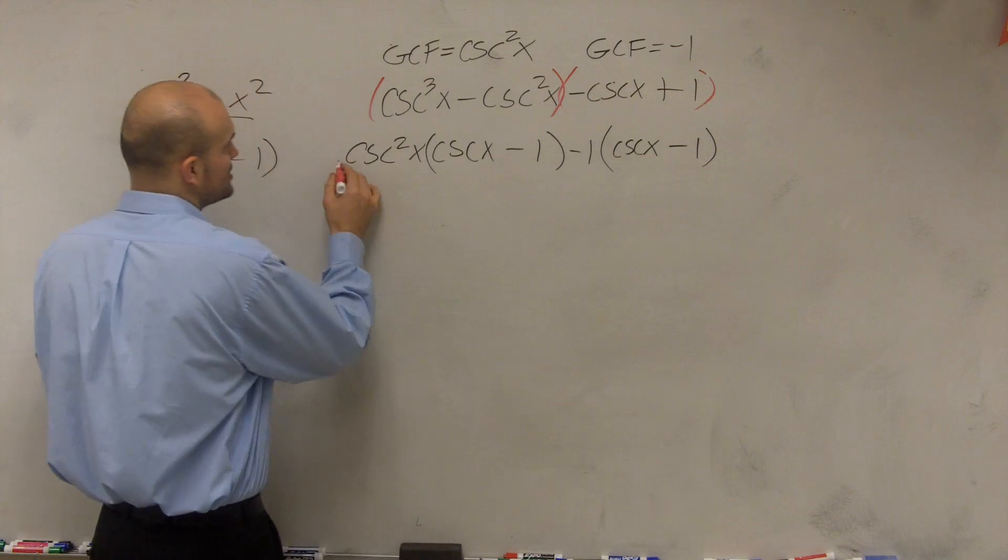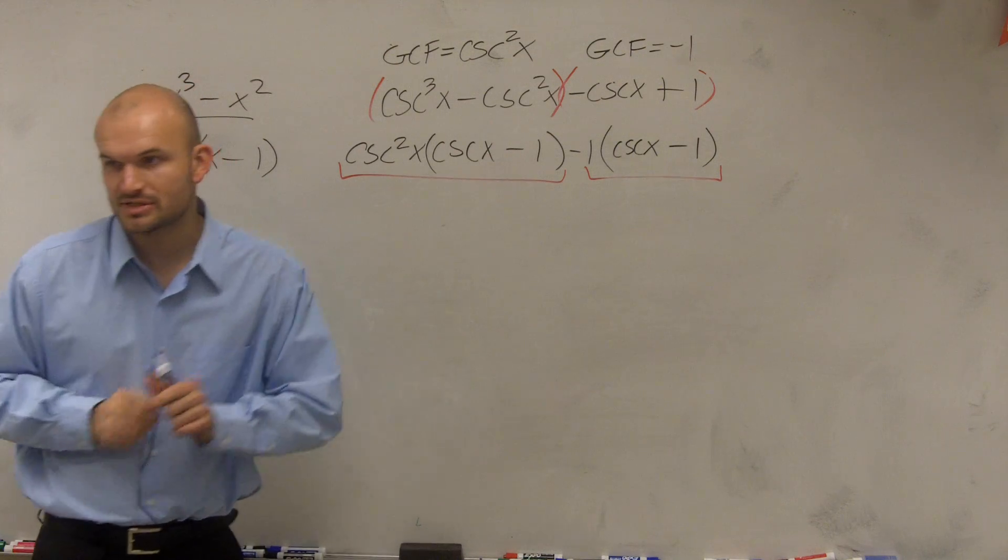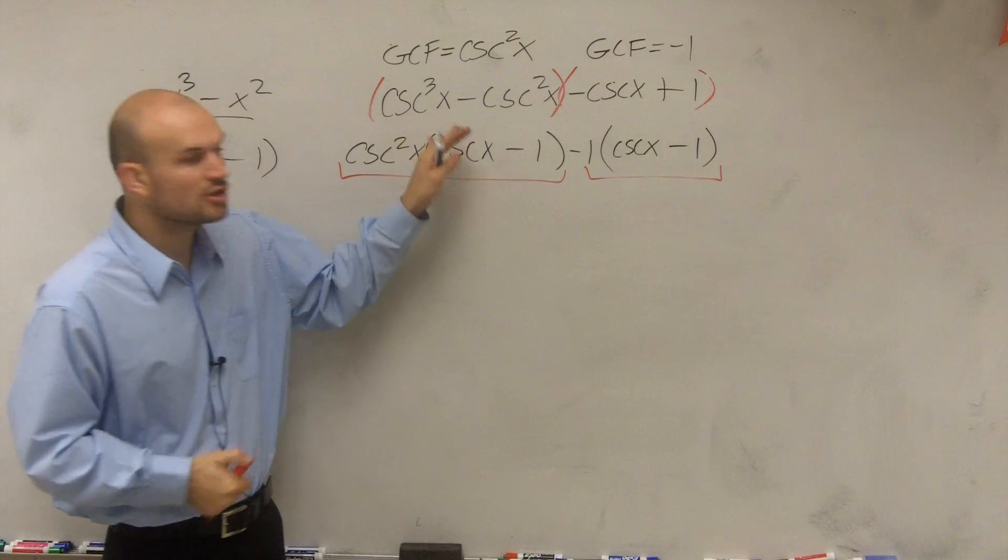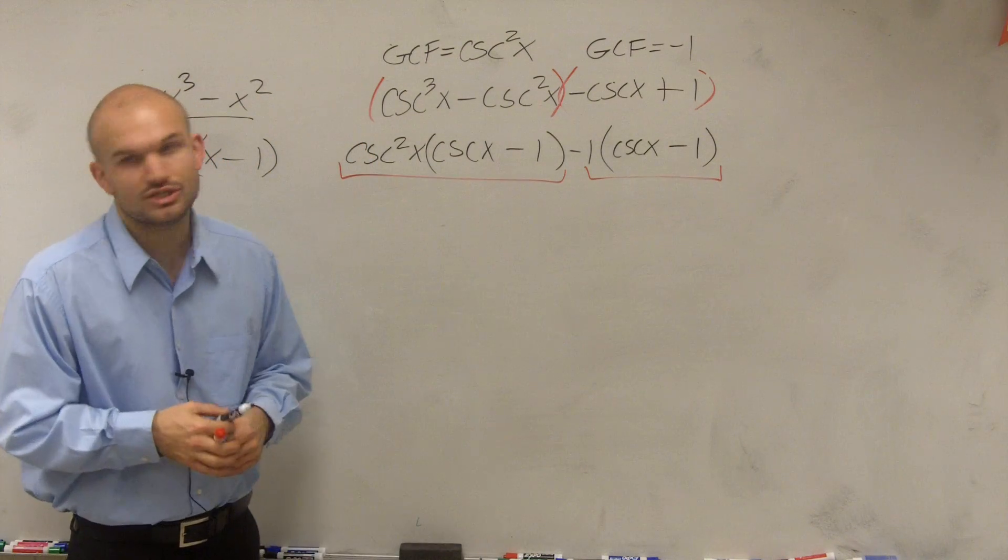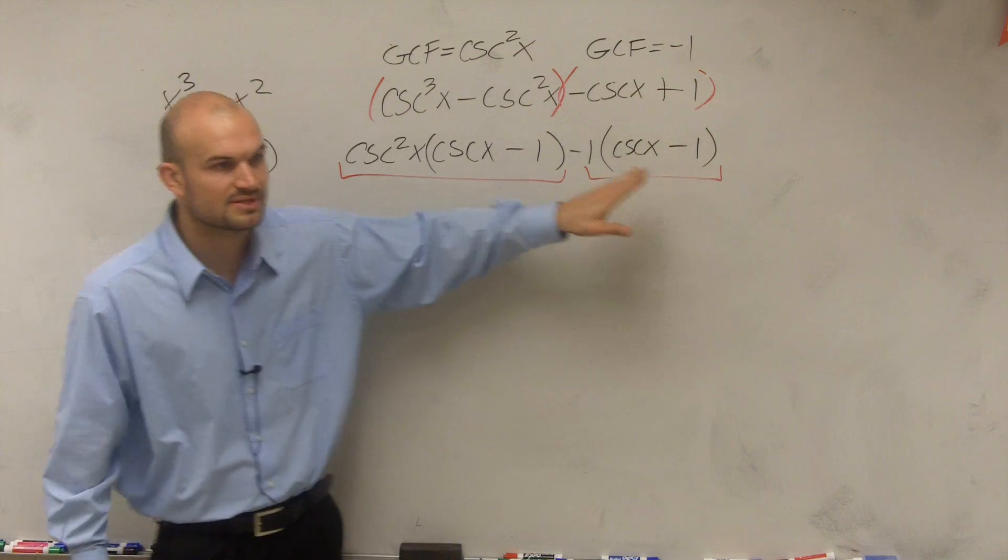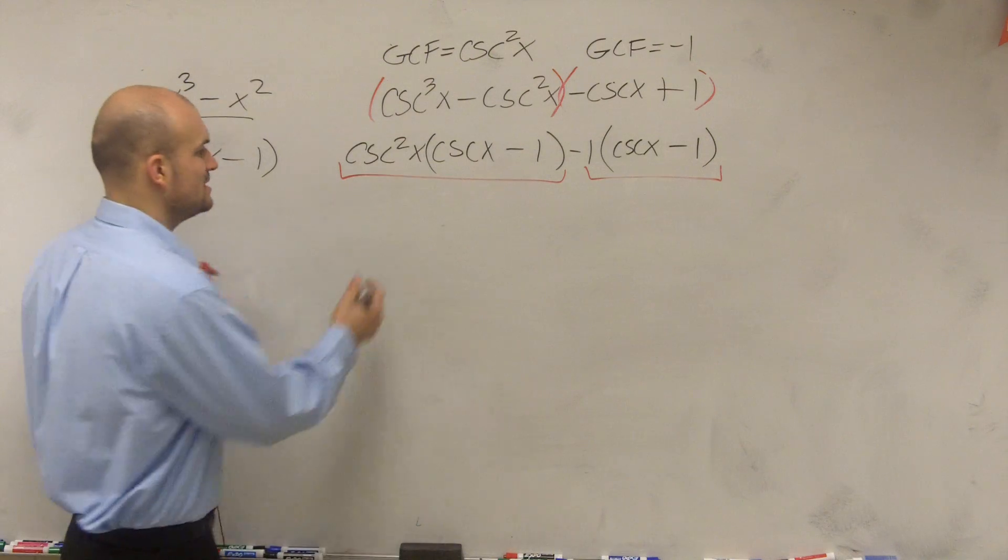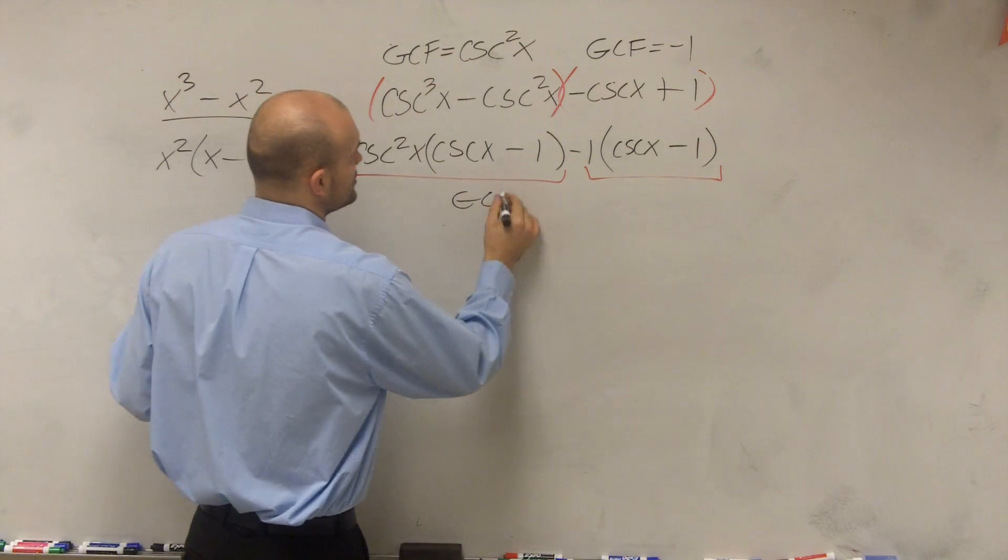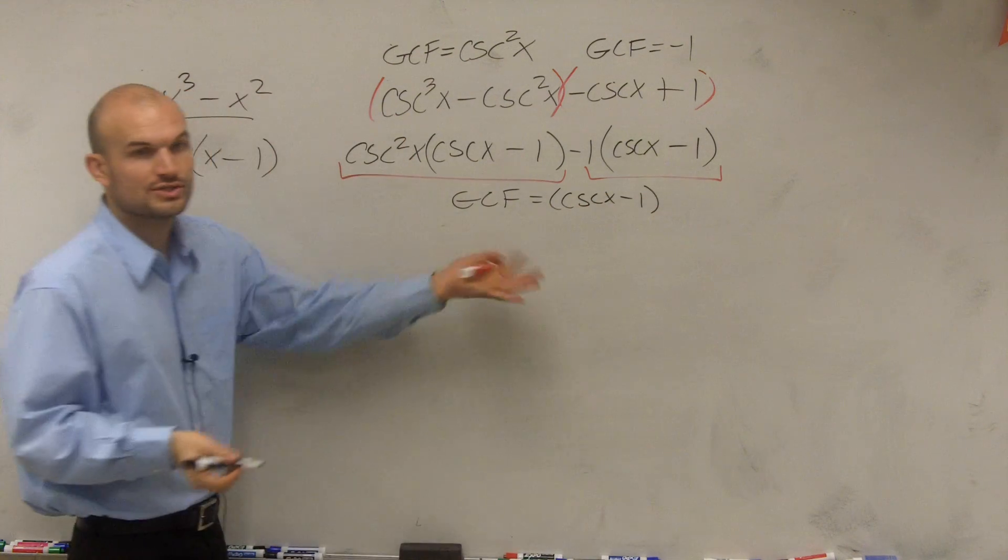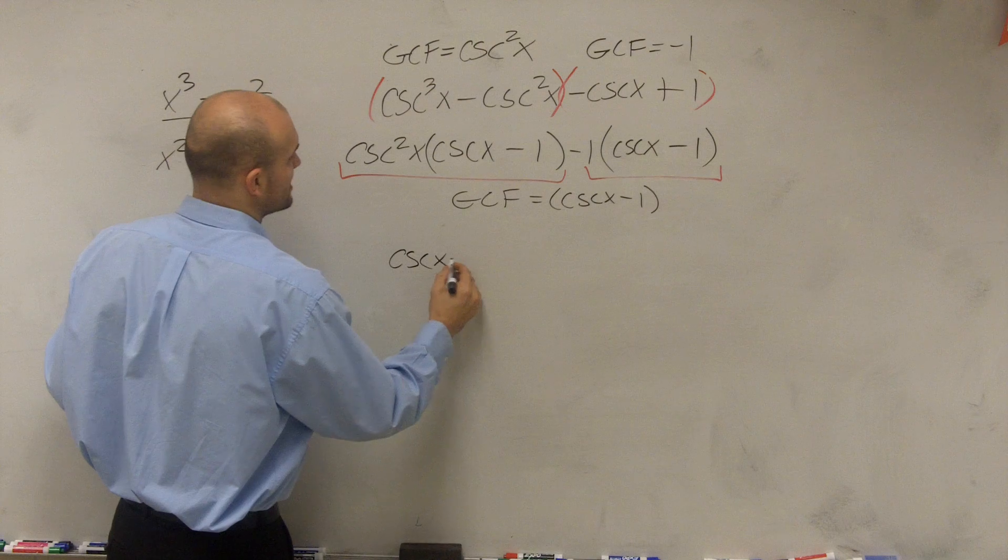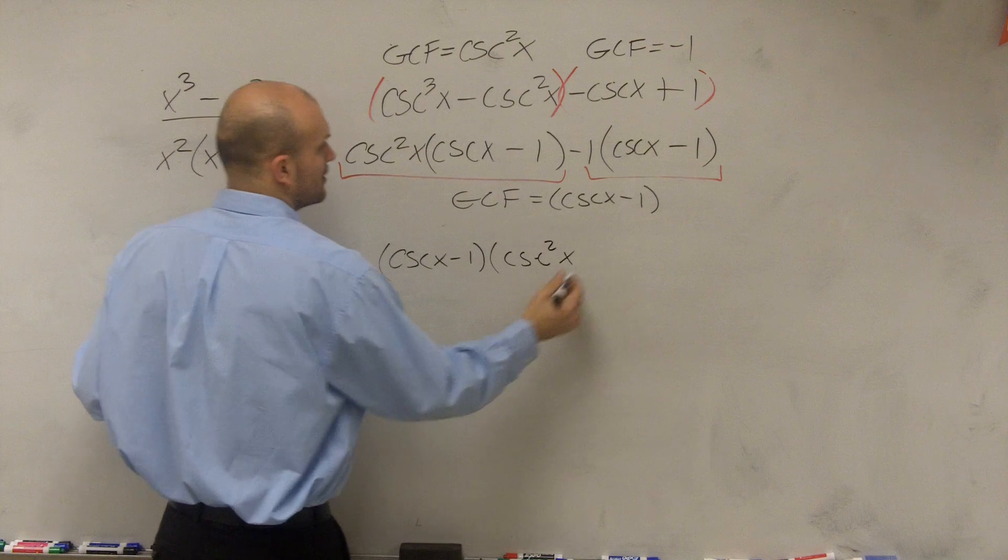So by factoring the GCF out of both terms, now I have two terms here. Terms are separated by the addition and subtraction sign. Since these are being multiplied by each other, they're still part of the same term. So now I have two terms. So now I need to determine what is the GCF of these two terms. What do these two terms share as far as a term? Cosecant. Right. So the GCF of both these terms is equal to (cscx - 1). So you're going to factor that out. So (cscx - 1) times (csc²x - 1).